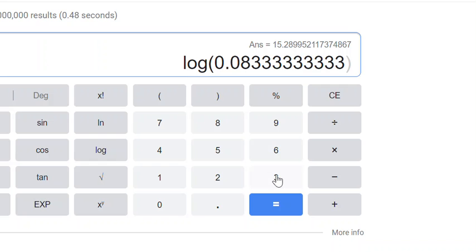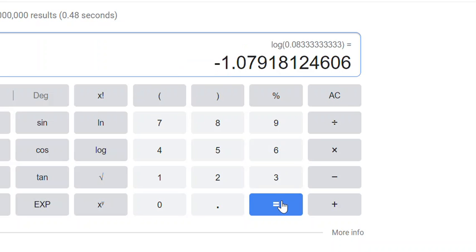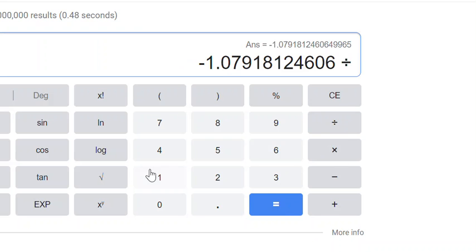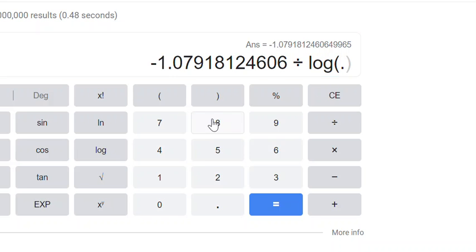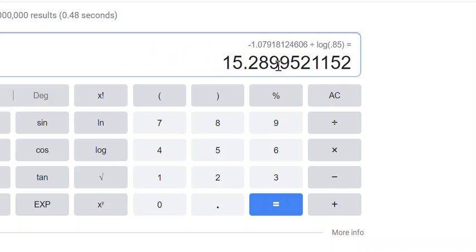So the more decimal places I use, the more precise it'll be. All right, that is that value that's being divided by log of 0.85 and I get 15.2.